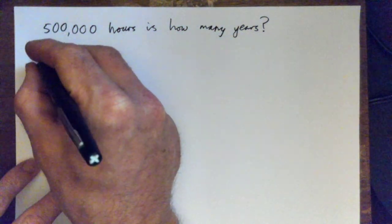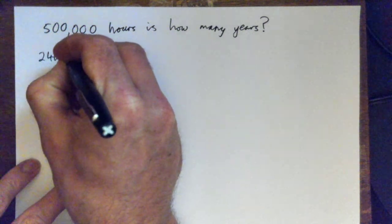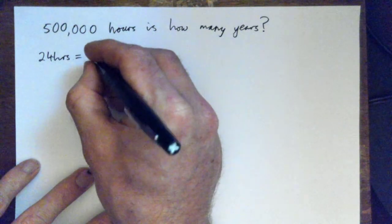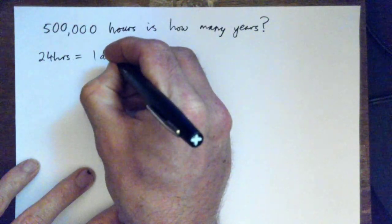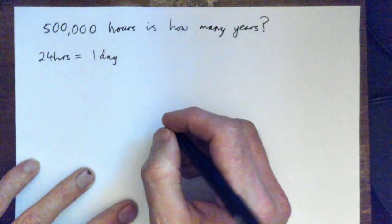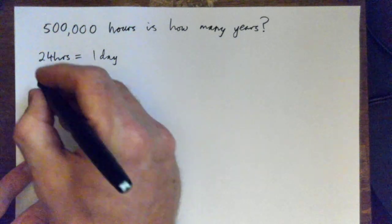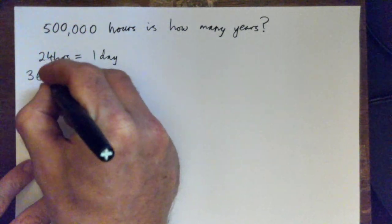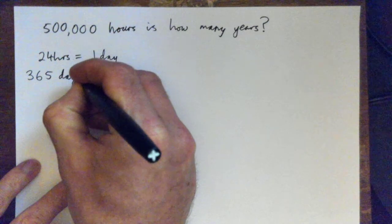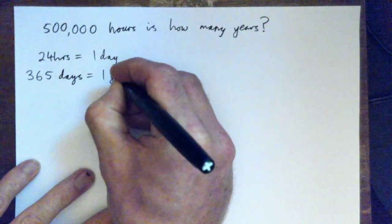Okay, 24 hours equals how many days? That'll be one day, right? And we can probably just go from days to years then. So a number of days in a year would be that, right? So we can convert hours to days and then convert days to years. That make sense?